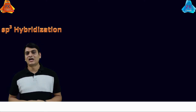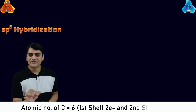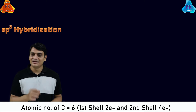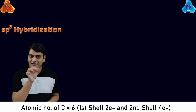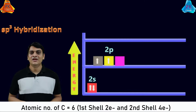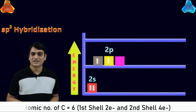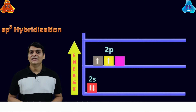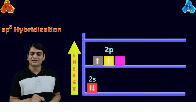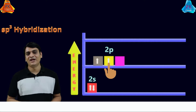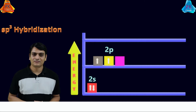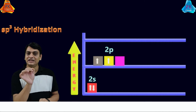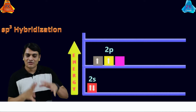Now let's take the example of carbon, whose atomic number is 6. It contains 2 electrons in the first shell and 4 electrons in the second shell. We will talk about the valence shell, that is 4 electrons. In the ground state, 2 electrons are present in 2s, 1 electron in px, and 1 electron in py.